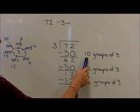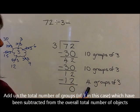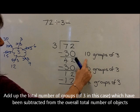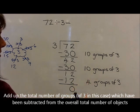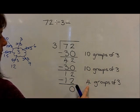We now look to see how many groups of 3 we've subtracted altogether. So we've got 10, plus another 10 is 20, plus another 4 is 24.